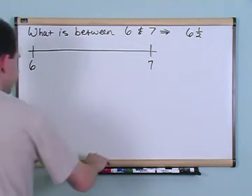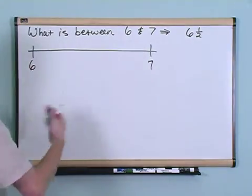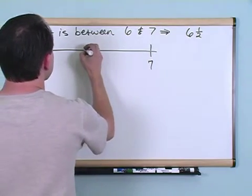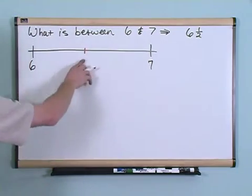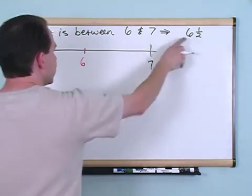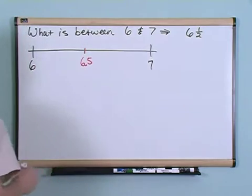Now, we already said that between 6 and 7, we're going to have 6 and a half. And it's going to be right in the middle here. So let's go ahead and do that. We'll look here. We'll have 6 and a half, but we're going to write it a little bit differently. Instead of writing the one half, we're going to say 6.5.